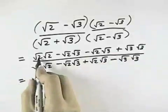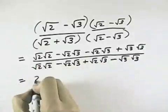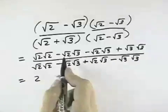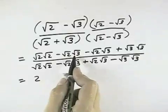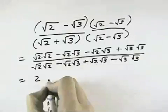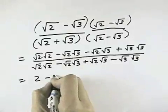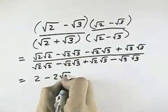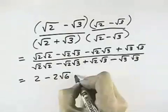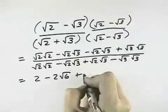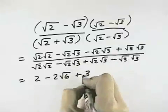So in the numerator, square root of 2 times itself is 2. Then square root of 2 times square root of 3 is square root of 6, but I've got 2 of those, so minus 2 times the square root of 6, and then plus square root of 3 times itself is 3.